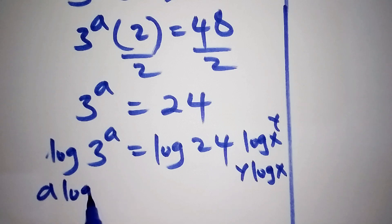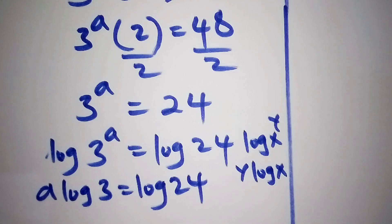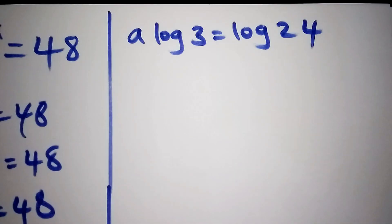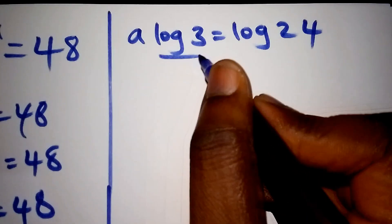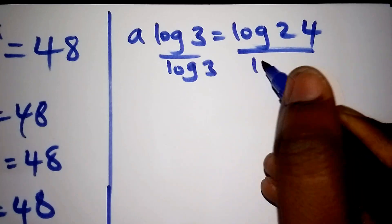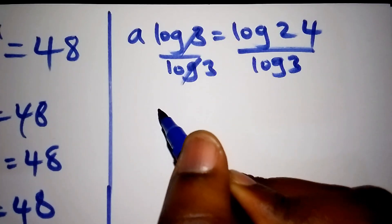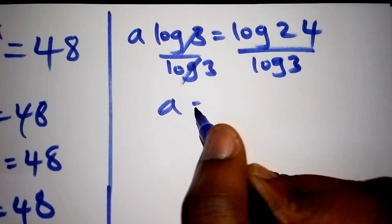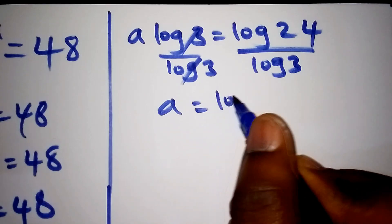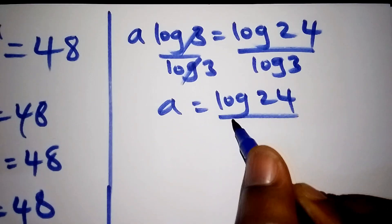So a times the log of 3 is equals to the log of 24. Next we shall divide both sides by the log of 3. Log 3 and log 3 shall cancel each other, so now our a shall be the log of 24 all over the log of 3.